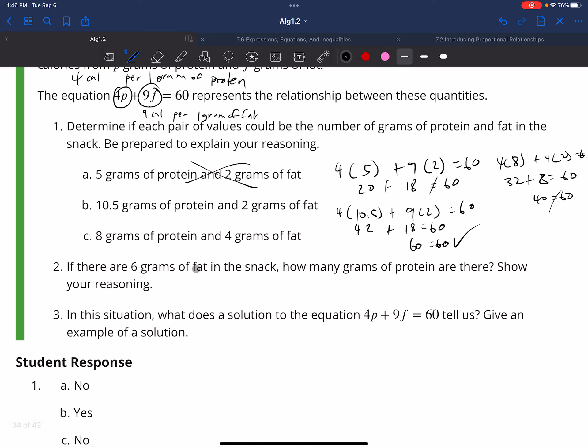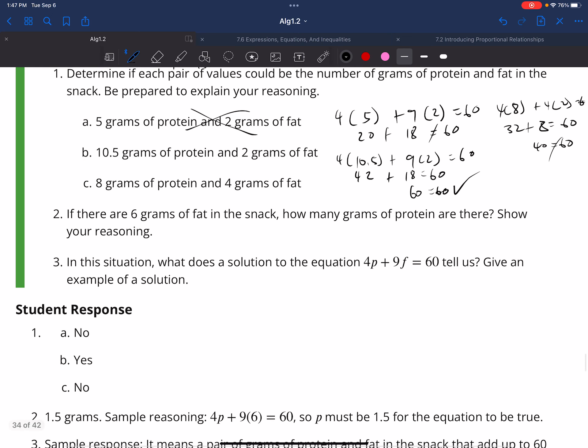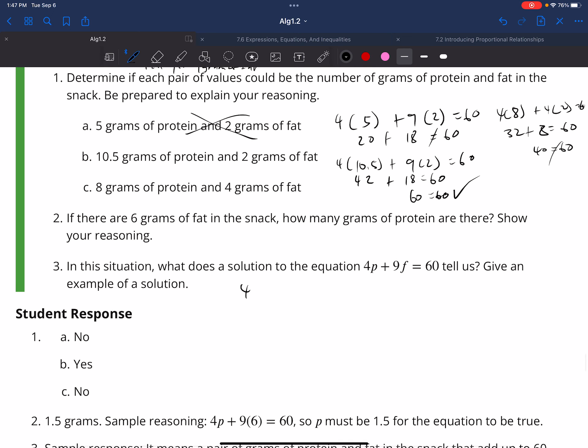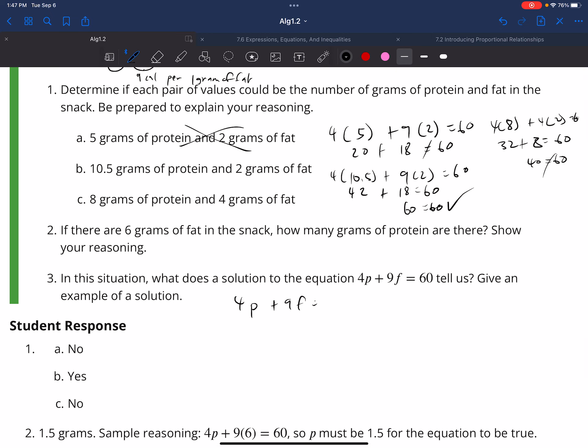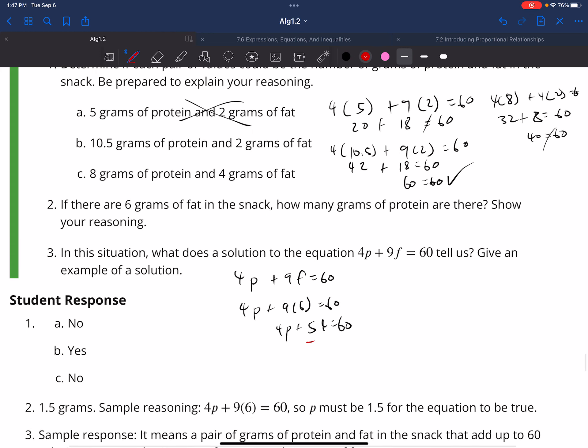Now, if there are 6 grams of fat in the snack, how many grams of protein are there? Show your reasoning. Well, so if I have 4P plus 9F is equal to 60, it's going to be 6 grams of fat. So it's going to be 4P plus 9, 6 grams of fat, is equal to 60. So it's going to be 4P plus 9 times 6, 9 times 6 is 54, equals 60, and we're going to subtract 54 on both sides.